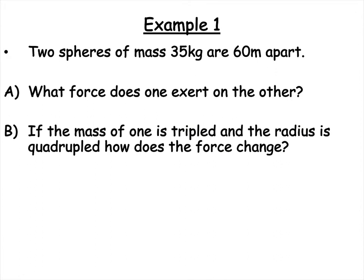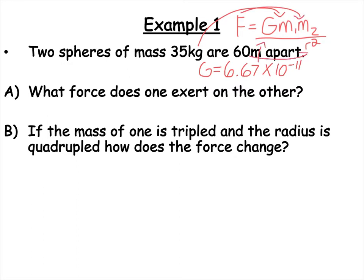Here we go. We've got two spheres of mass, 35 kilograms, 60 meters apart. What force does one exert on the other? So we're going to need our universal gravitation equation. There's our equation, and here's our G. So if we just go plug in 35 for both of the masses, this for G, and then 60 for our R, and then square the R, we should get 2.27 times 10 to the negative 11th, and then it's force, so that's Newtons. That's the force that they exert on one another.